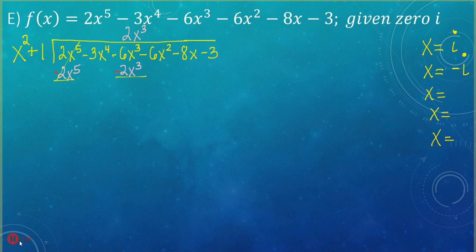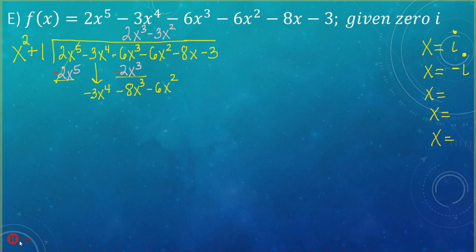This one cancels. I'm going to carry down my negative 3x to the fourth, combine my like terms — that gives me negative 8x³ — and I'll bring down the negative 6x². Dividing again: negative 3x⁴ divided by x² is negative 3x². Now multiply: negative 3x² times x² is negative 3x⁴, and negative 3x² times 1 is negative 3x². We change both signs, which is why it cancels. Drop down the negative 8x³.